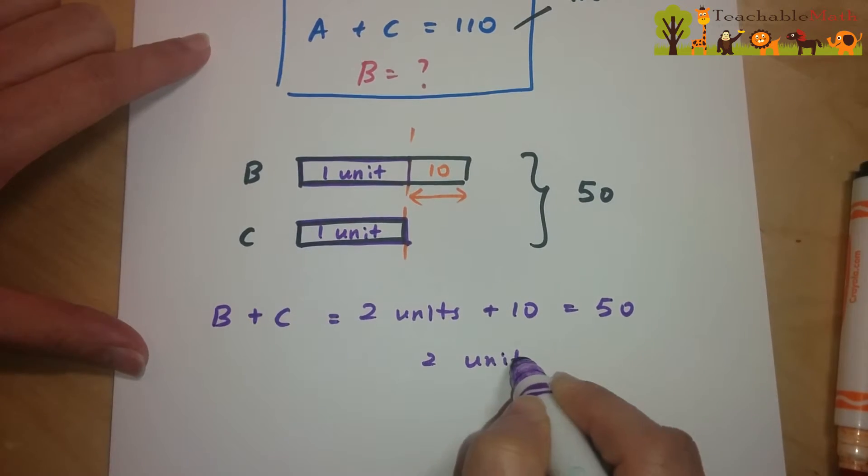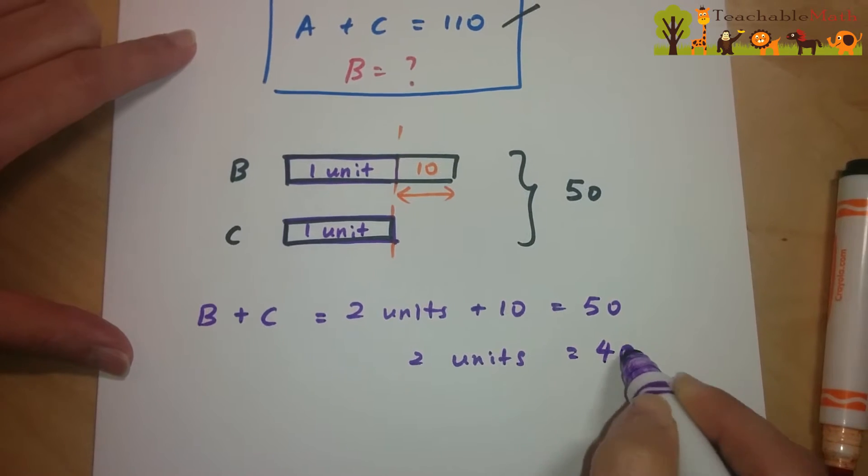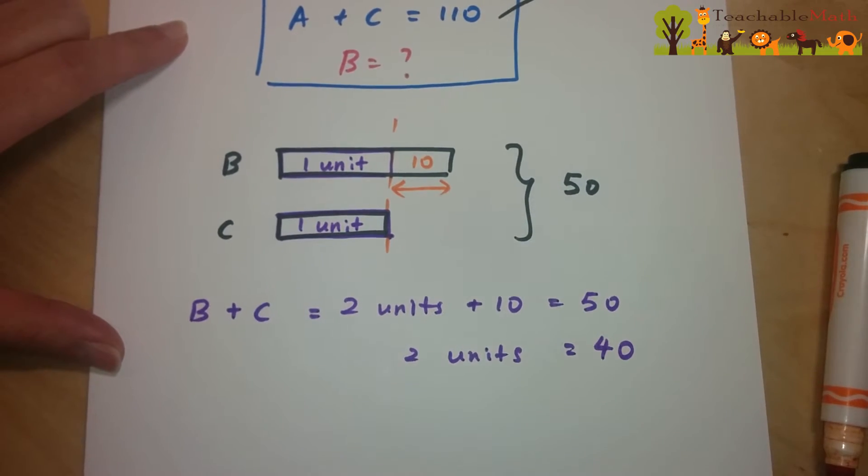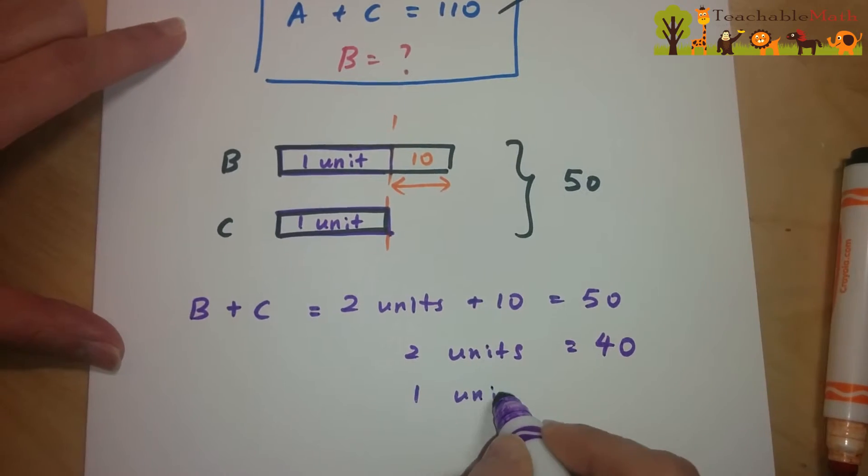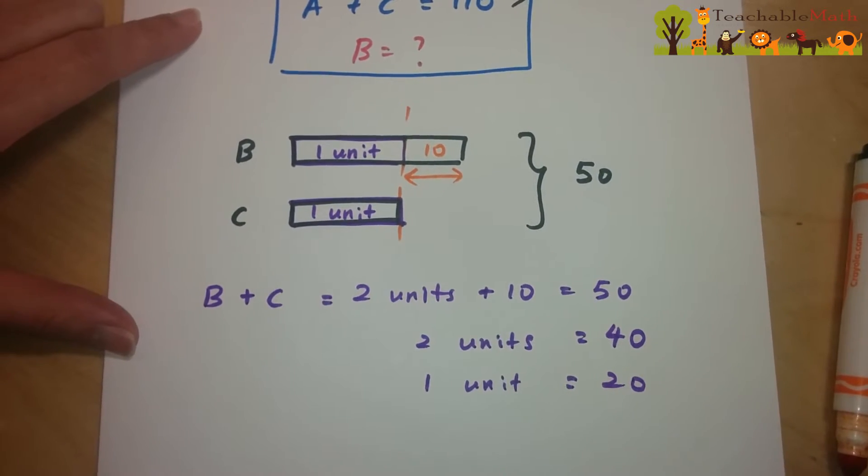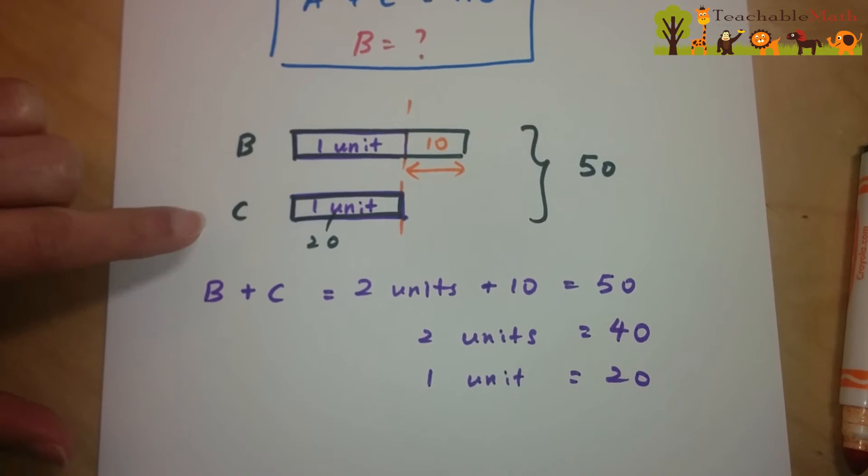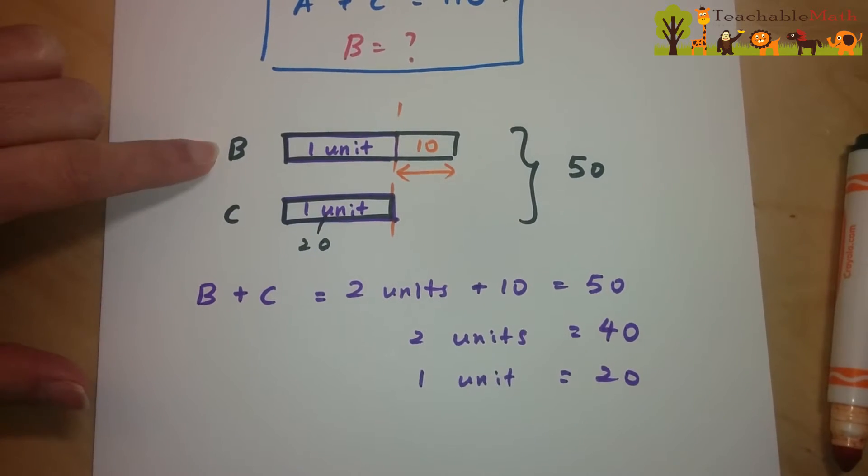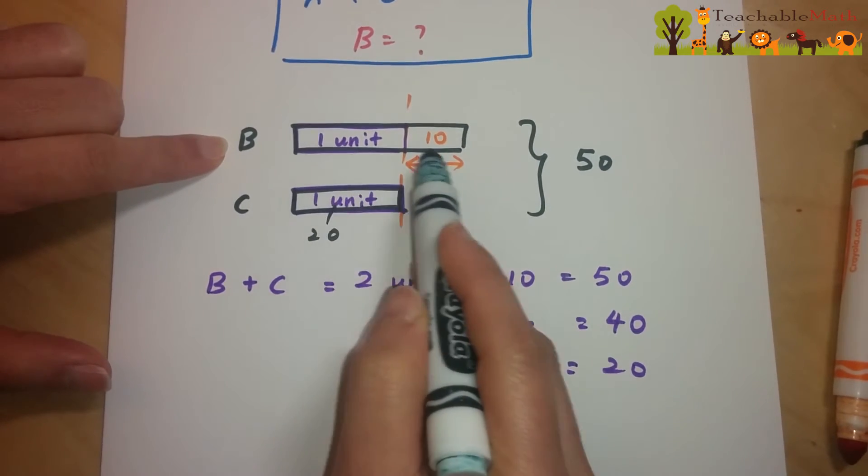So two units has to be 40, because 40 plus 10 is 50. So one unit has to be 20. So this is 20. If C is 20, B has to be 20 plus 10, which is 30.